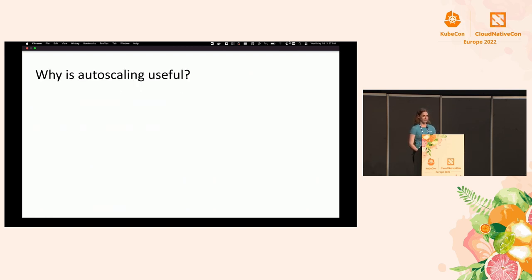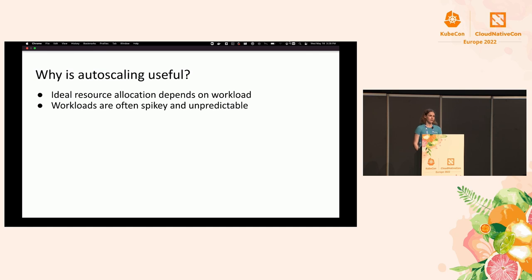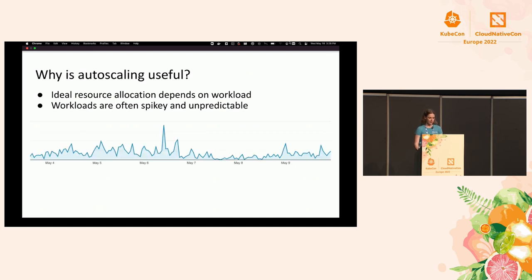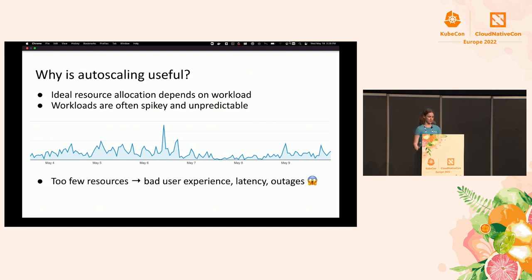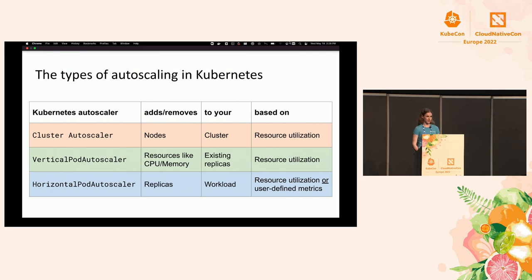Autoscaling is intended to help solve some of these problems, and Kubernetes provides really good support for autoscaling. The ideal resource allocation completely depends on your workload, and these workloads are spiky and often unpredictable. Here we have a screenshot of a workload where traffic can be over 10x at one point versus another. These spikes will bite you when you least expect it. If you have too few resources, you get bad user experience, latency problems, and even outages. But on the other hand, you can't just allocate everything under the sun either — it's really expensive.